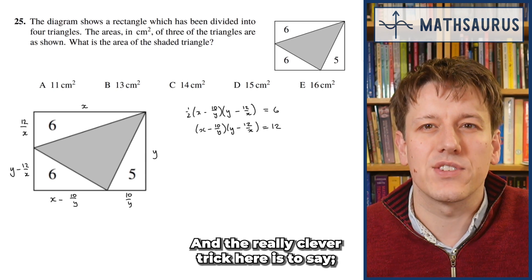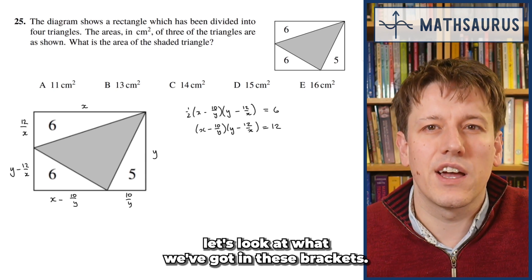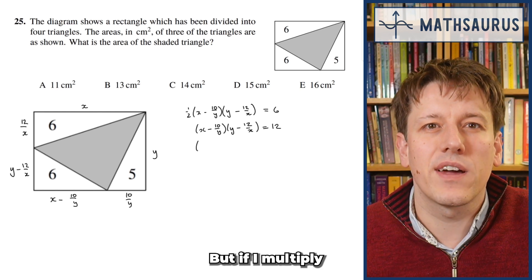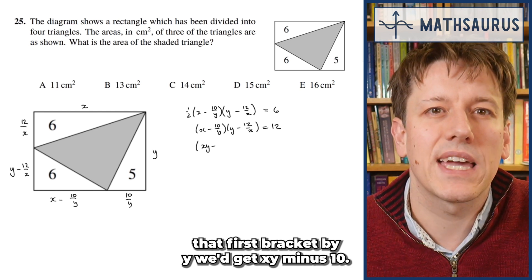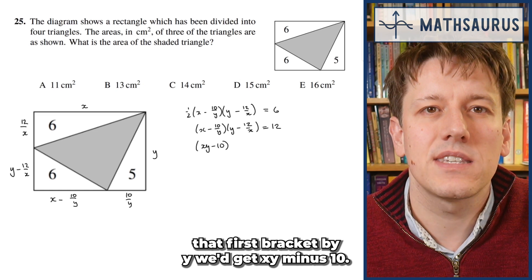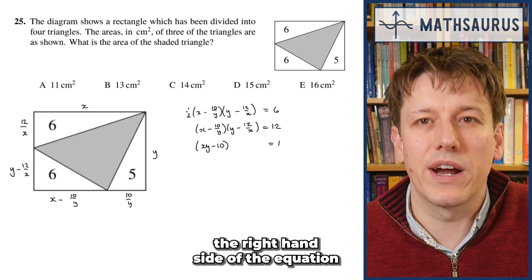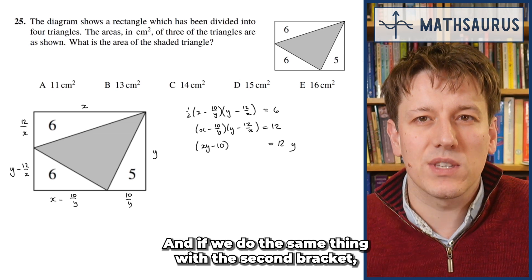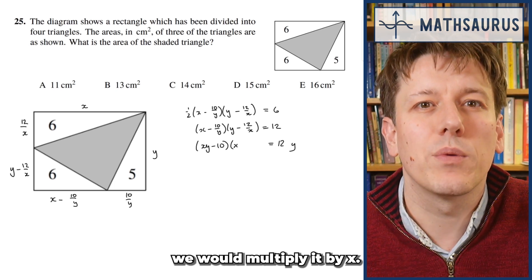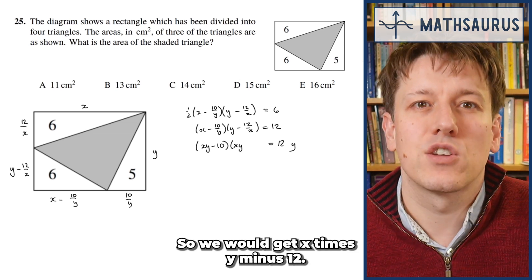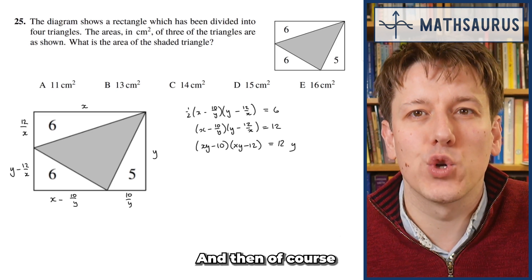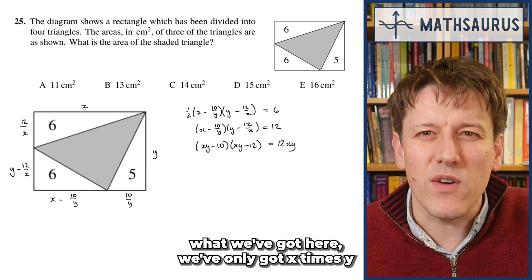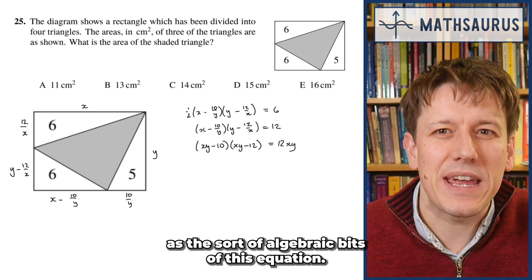The really clever trick here is to look at what we've got in these brackets — there's a Y and an X in the denominator. If I multiply the first bracket by Y, we'd get XY minus 10, but I would need to multiply the right-hand side by Y as well. And if we do the same thing with the second bracket and multiply by X, we get X times Y minus 12, and we multiply the right-hand side by X as well.